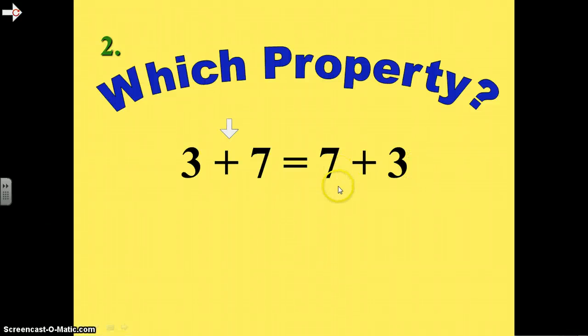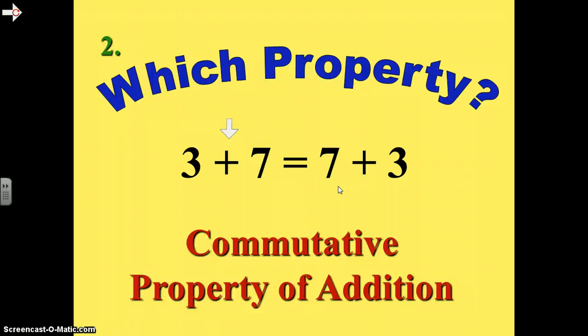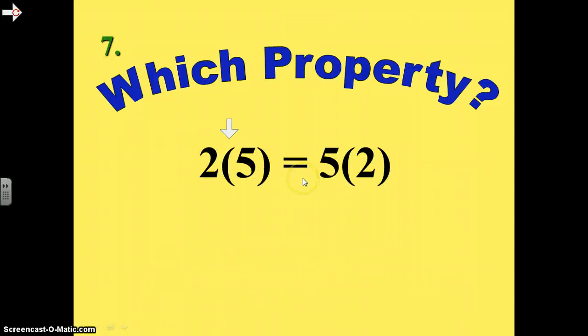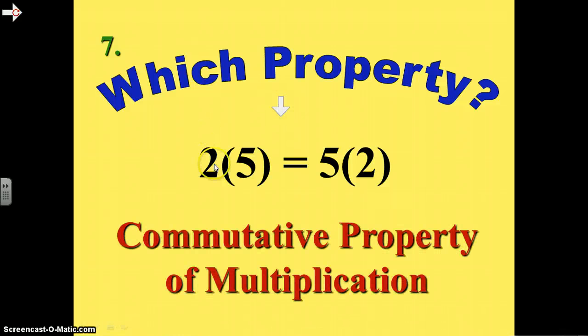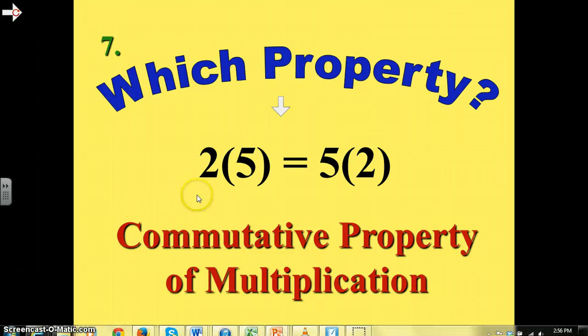And that is called the commutative property of addition. It also works with multiplication, so I'll go ahead and show you that 2 times 5 is the same thing as 5 times 2. 2 times 5 is 10. 5 times 2 is also 10. That's the commutative property of multiplication. The commutative property just means that you can add or multiply in any order. Doesn't work with subtraction. Doesn't work with division, but it always works with addition and multiplication.